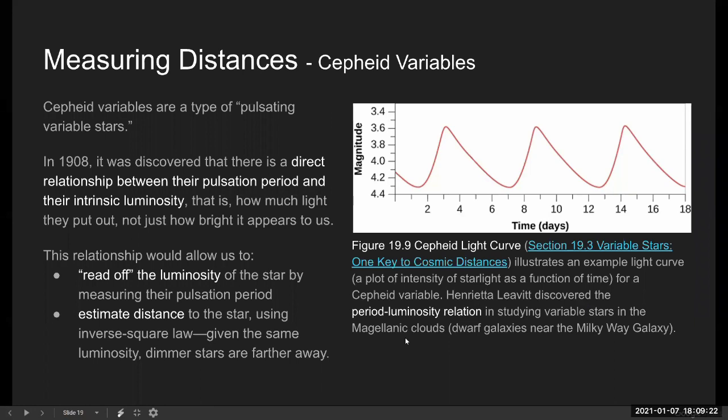And so she noticed the relationship between the oscillation period and the brightness. And since the distance to those stars are more or less the same, about, I think, tens of thousands of light years, she inferred from that relationship to the brightness to the relationship to the intrinsic luminosity.